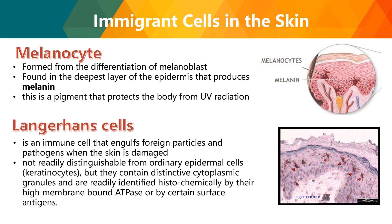There are different types of immigrant cells in the skin. First, the melanocyte, formed from differentiation of melanoblasts, found in the deepest layer of the epidermis, and produces melanin — a pigment that protects the body from UV radiation. Langerhans cells are immune cells that engulf foreign particles and pathogens when skin is damaged. They are not readily distinguishable from ordinary epidermal cells but contain distinctive cytoplasmic granules and are identified histochemically by ATPase or surface antigens.